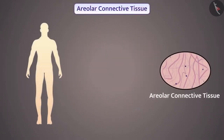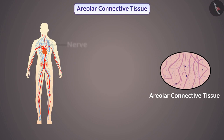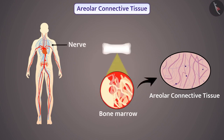The areolar connective tissue is present between the skin and muscles of the body, around the blood vessels, and in the nerves and bone marrow. The cells of this tissue are loosely packed and are embedded in a jelly-like matrix. This tissue fills the space inside organs, supports the internal organs, and also helps in repair of tissues.